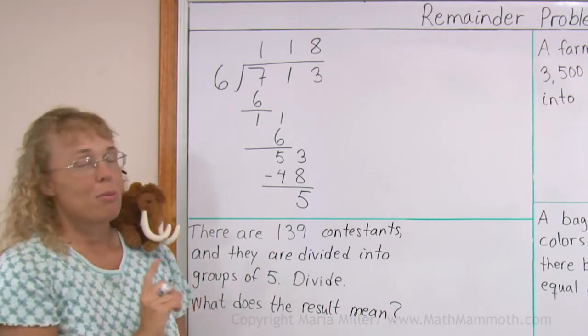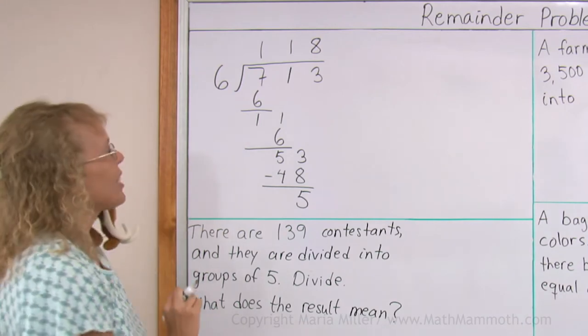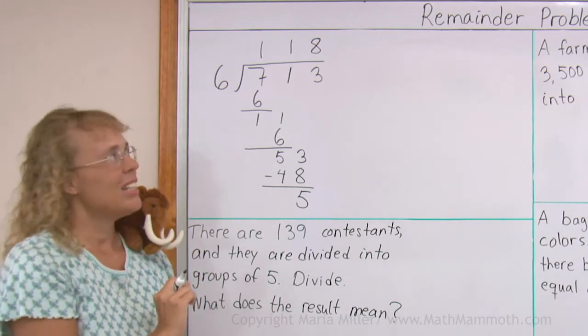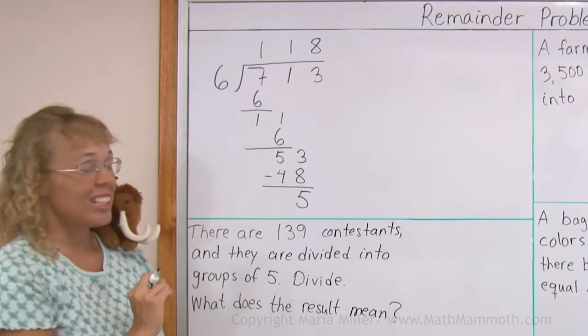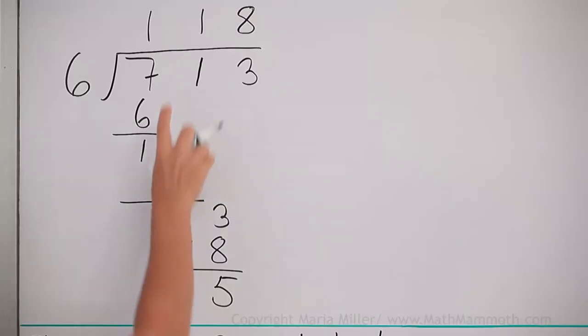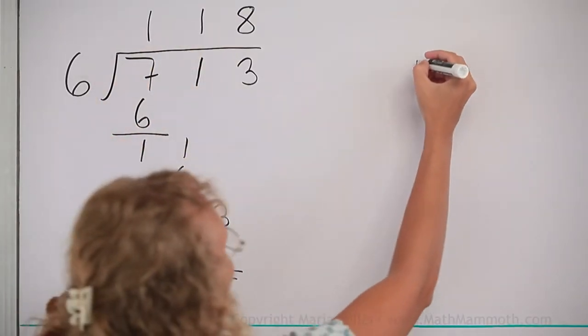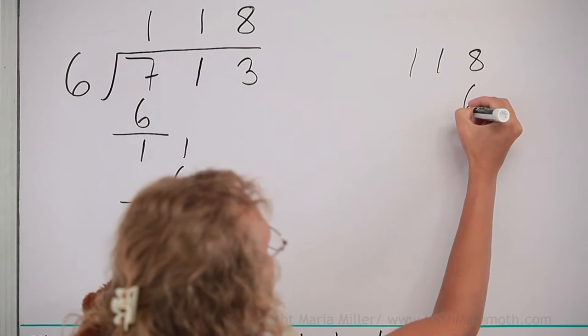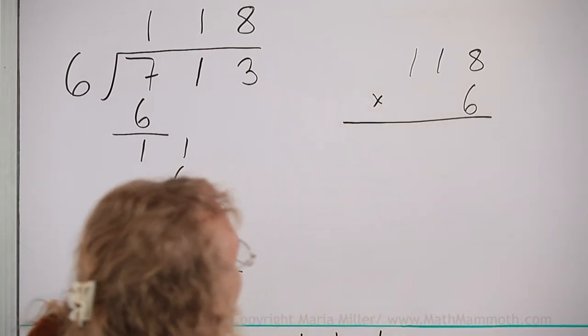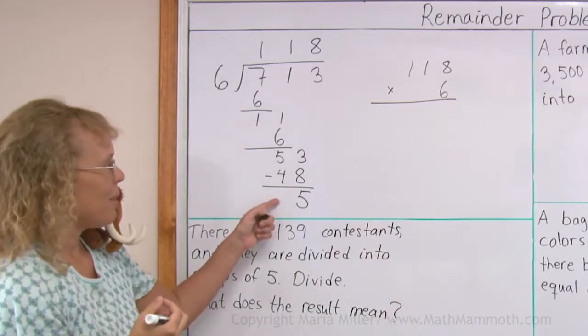Now let's also remember, how did we check problems that have a remainder? It's a division problem, so we're going to check it by multiplying. Take your answer times 6, 118 times 6, and in the end, we're going to add the remainder.